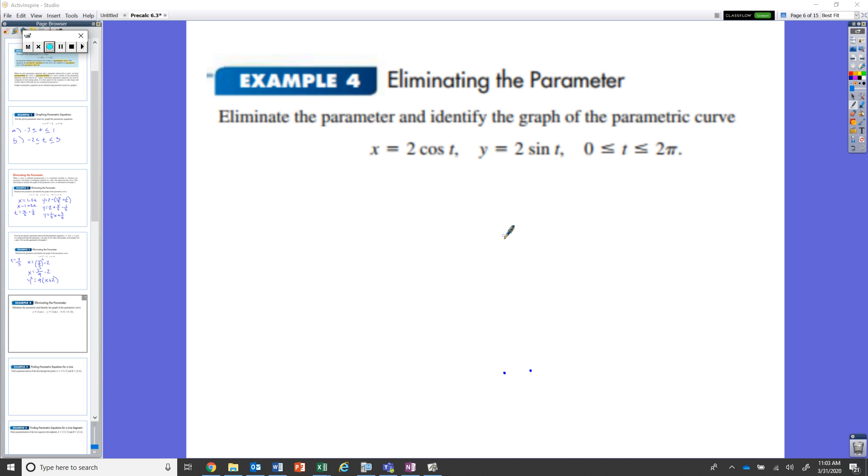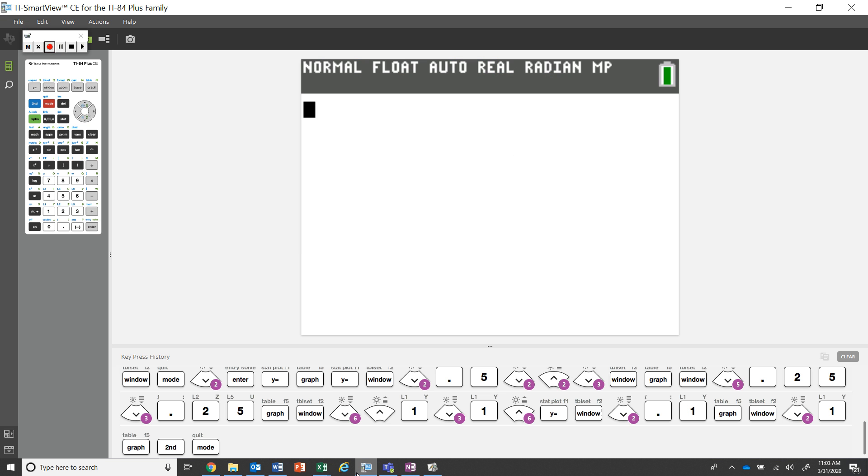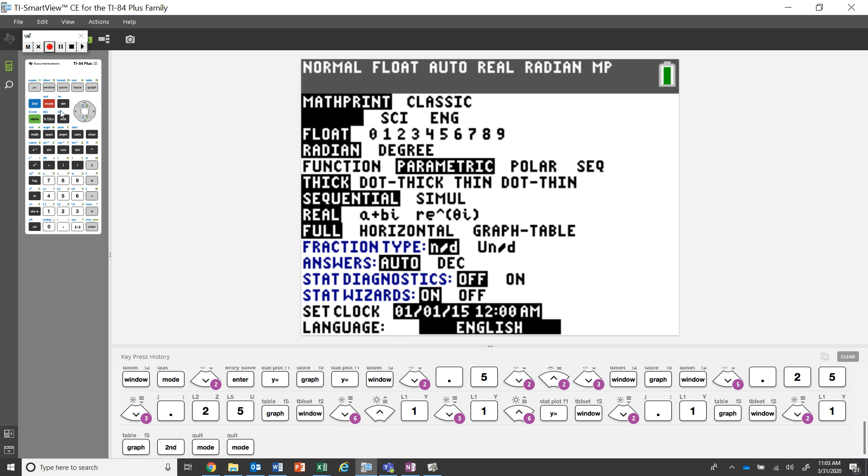And it kind of provides an interesting situation for us. And I want to go to the graph right away to see what we can take a look at. So let's go ahead and graph this parametric function. Let's go to mode. Let's make sure that we are in parametric for our mode. And then because it's at zero to two pi, I want to make sure that I'm in radian mode right now. So radian mode and parametric mode.